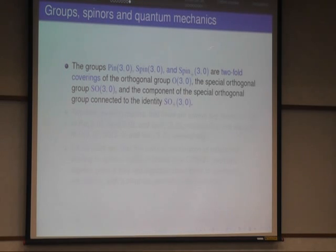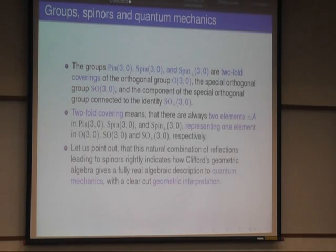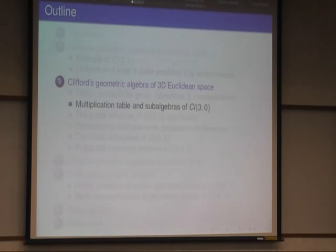So now about pin groups, spin groups, spinors and quantum mechanics. The pin, spin and spin plus groups are twofold coverings of the orthogonal group, the special orthogonal group, and the SO plus group. So the component which is connected to the identity. And twofold coverings means you always have two elements, plus minus A, representing one element in the groups O(3), SO(3), SO plus. And so this is a natural combination of reflections that leads us to spinors. And this indicates how Clifford's Geometric Algebra unifies the algebraic description and gives a fully real description because we don't use imaginary vectors from the beginning for quantum mechanics and gives also a geometric interpretation of the entities which square to negative numbers.